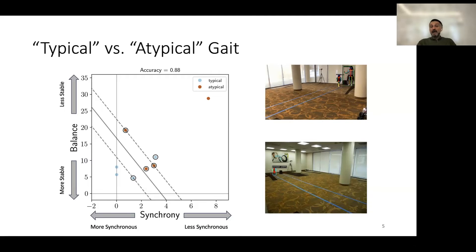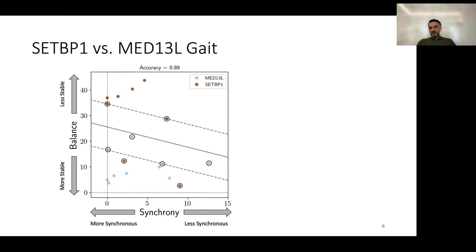And so the next question that we had was how about if we apply this to two of the genetic groups that we had, and these are the two larger genetic groups that we had SETBP1 and MED13L. And we analyzed all of the participants that we had in these two groups. And this is the result of the similar analysis that I showed you on the previous slide. As you can see, the trend is very similar in the sense that you have this line which separates the two segments of the space in the sense that if you're above this line, you are relatively less synchronous, you have less synchronous and less stable gait.